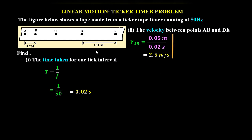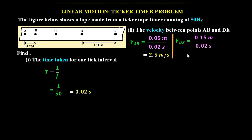Next, the velocity between D and E is displacement over the time interval. The displacement is 15 centimeters, converted to 0.15 meters. The time interval will always remain 0.02 seconds for all these intervals. So the velocity between D and E is 7.5 meters per second.